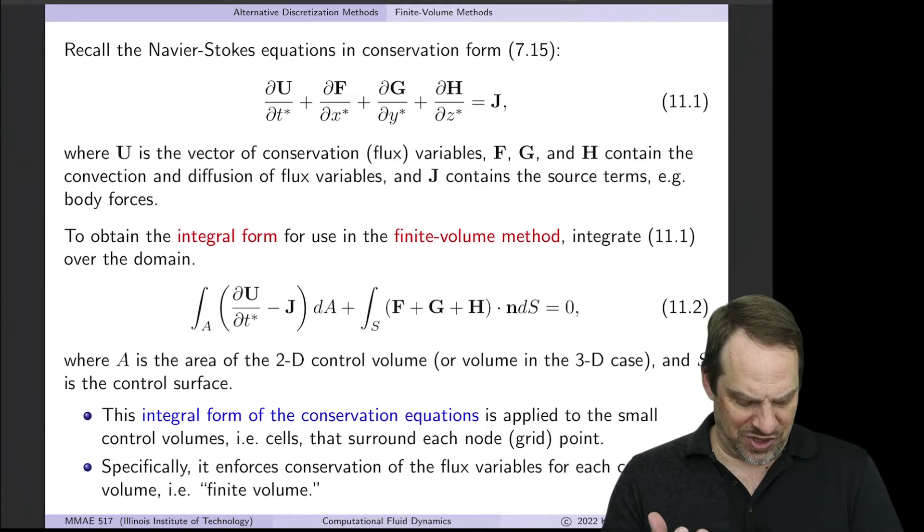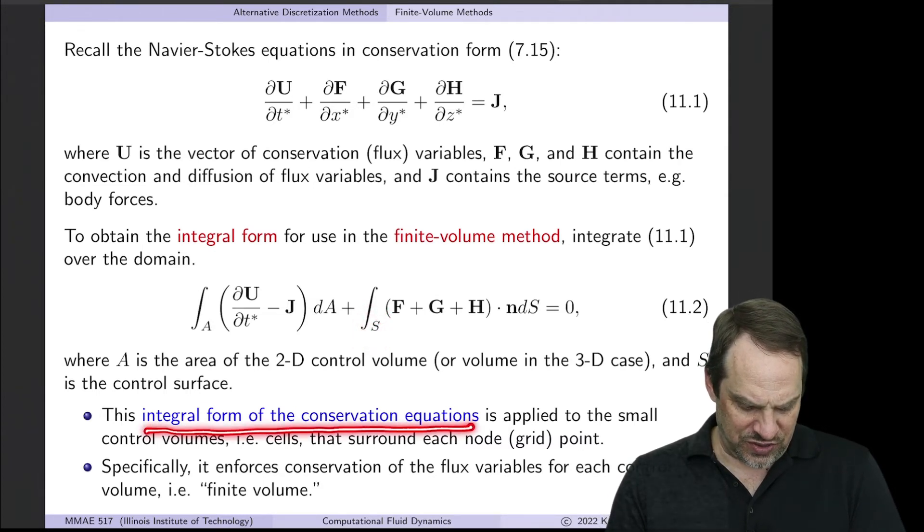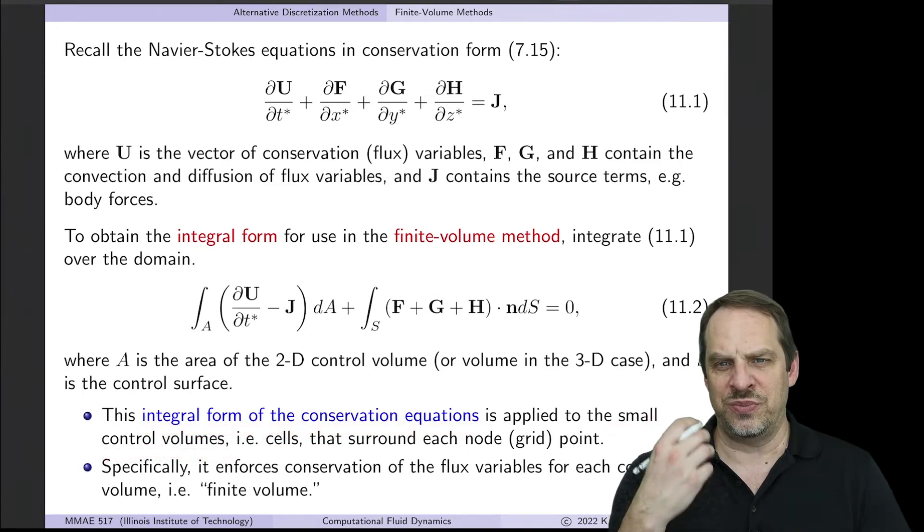So we take this differential form and conservation form and integrate it over a finite volume. That's the finite volume method. That gives us equation 11.2. We're integrating over the area that covers the surface as well as the surface itself. That gives us the integral form of the conservation equations.